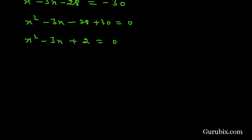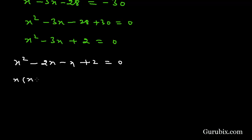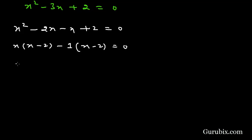Now we factor the quadratic x squared minus 3x plus 2 equals 0. The product is 2 and the sum is minus 3, so we split the middle term: x squared minus 2x minus x plus 2 equals 0. Taking x common from the first two terms gives x(x minus 2), and taking minus 1 common from the last two terms gives minus 1(x minus 2). So we get (x minus 1)(x minus 2) equals 0.